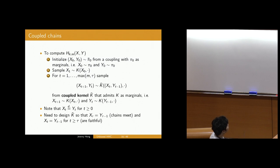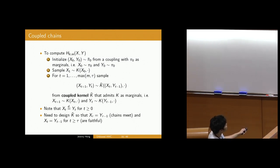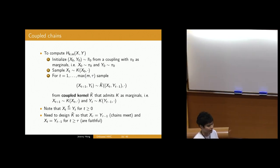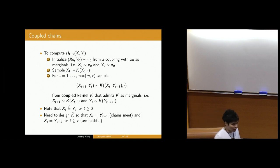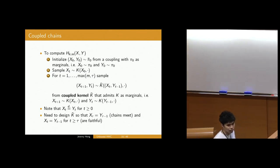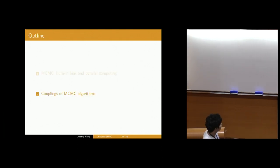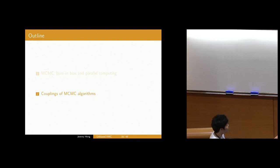The second thing we need to construct is a coupled kernel k-bar such that every time you sample from it, there's some chance the chains are going to meet exactly, and if they've already met they stay together. This brings me to the second half of the talk, where we look at how to do these things for MCMC algorithms.